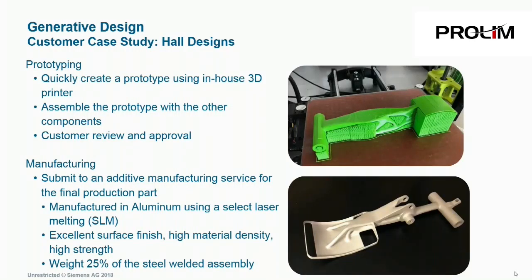To summarize the results of the Hall Designs Generative Design case study: a prototype was created in plastic using their in-house 3D printer, used to assemble alongside other components to prove fit and function, and for customer review and approval. The final production part was created by submitting the design to an external additive manufacturing specialist, who printed the component in aluminum using a selective metal sintering technique. The final component was 25% the weight of the original, had an excellent surface finish, and the high-density sintering process resulted in a very strong part.